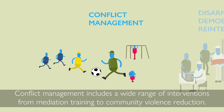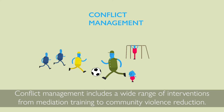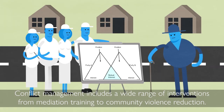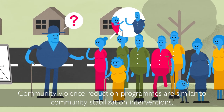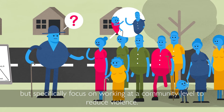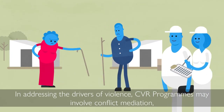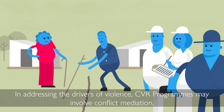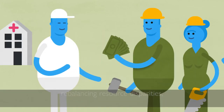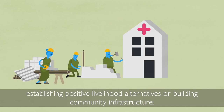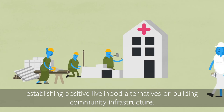Conflict management includes a wide range of interventions from mediation training to community violence reduction. Community violence reduction programs are similar to community stabilization interventions, but specifically focus on working at a community level to reduce violence. In addressing the drivers of violence, CVR programs may involve conflict mediation, rebalancing resource disparities, establishing positive livelihood alternatives or building community infrastructure.